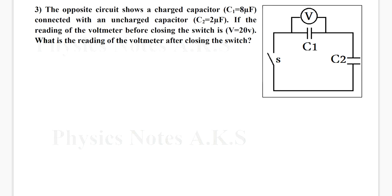Hello guys, how are you? We have question 3. The opposite circuit shows a charged capacitor C1 of 8 microfarads connected with an uncharged capacitor C2 of 2 microfarads. The reading of the voltmeter before closing the switch is 20 volts. What is the reading of the voltmeter after closing the switch?